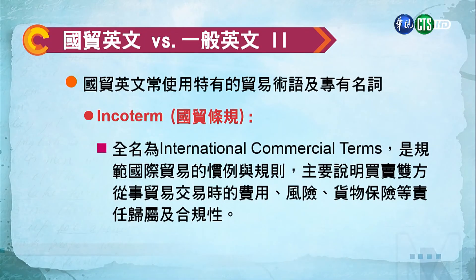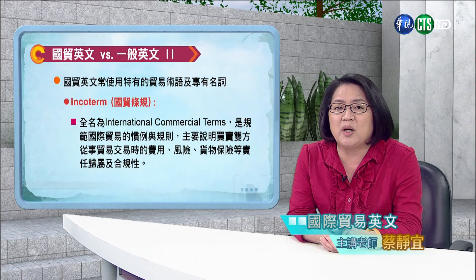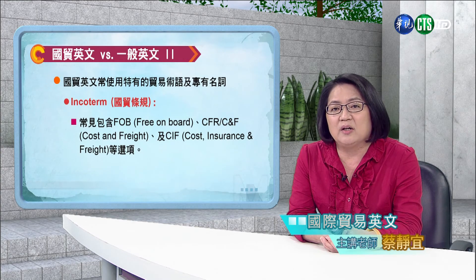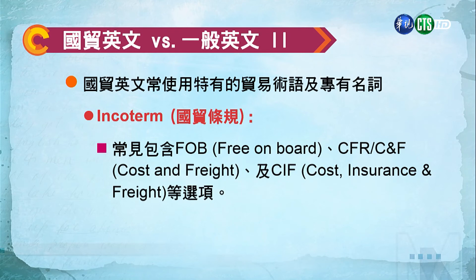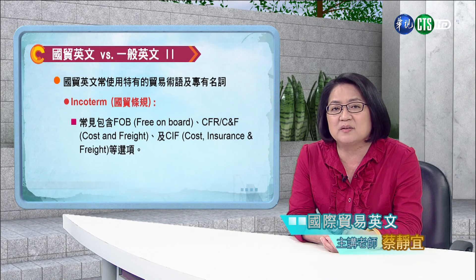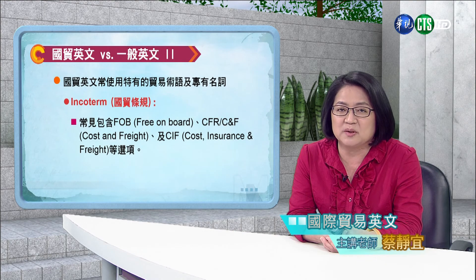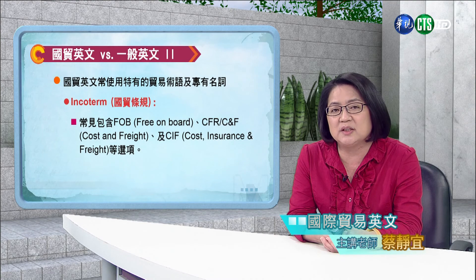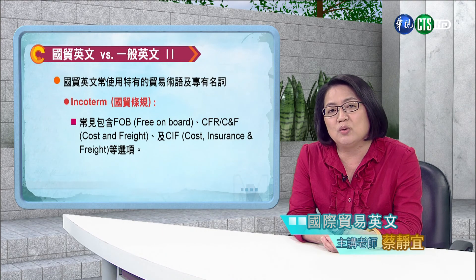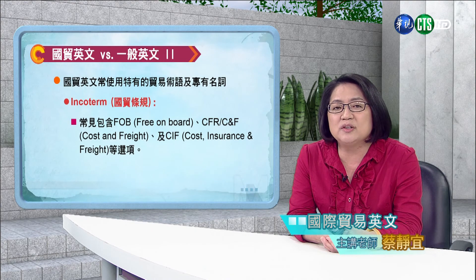另外還有Incoterm國貿條規，這是International Commercial Terms的簡寫。他是來規範國際貿易的慣例與規則，主要說明買賣雙方在從事貿易交易時，費用、風險、貨物保險等責任的歸屬。我們常見的包含FOB（Free on Board）、CFR或CNF（Cost and Freight）、以及CIF（Cost, Insurance and Freight）等選項。在國貿裡面只要看到FOB，我們就知道買方跟賣方的責任分別要付到什麼程度。